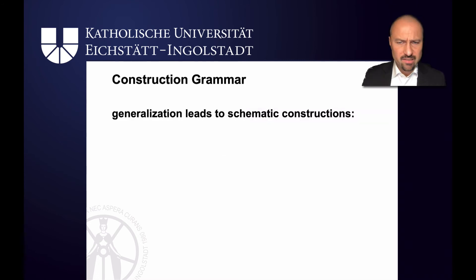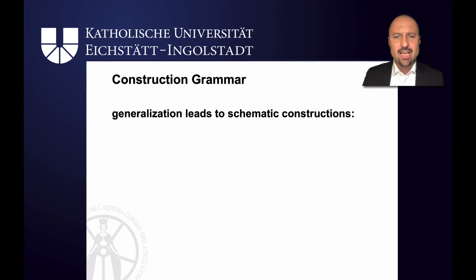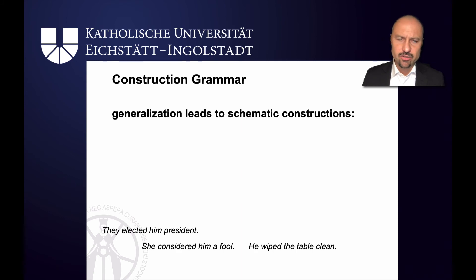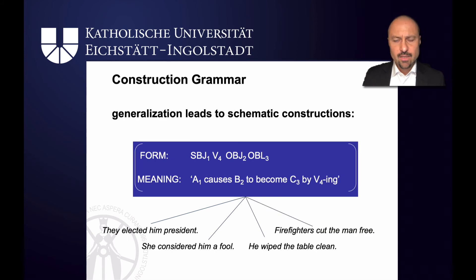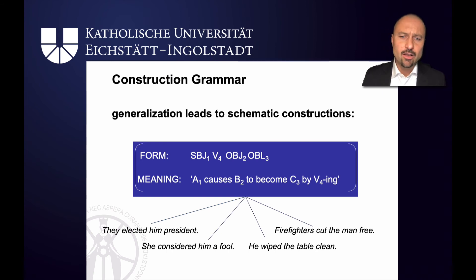As we've seen, construction grammar is different. For construction grammar, input is important: input leads to generalisation, and that gives us schematic constructions. So 'they elected him president,' 'she considered him a fool,' 'he wiped the table clean' — these give us the resultative construction, which has slots for the agent, the patient, and the state. And we can fill in 'firefighters cut the man free' into that and get the desired meaning: the firefighters cause the man to become free by cutting.